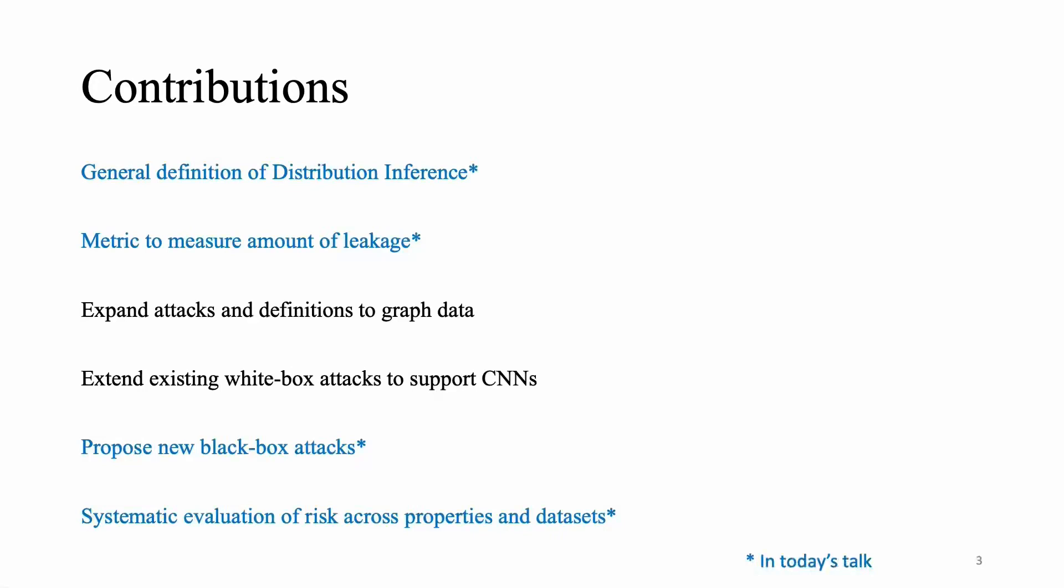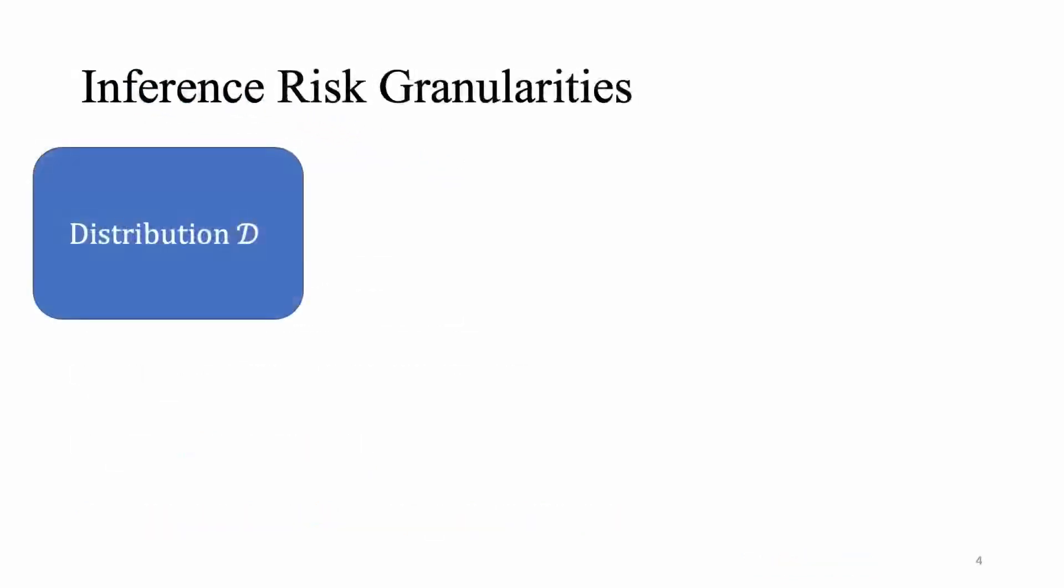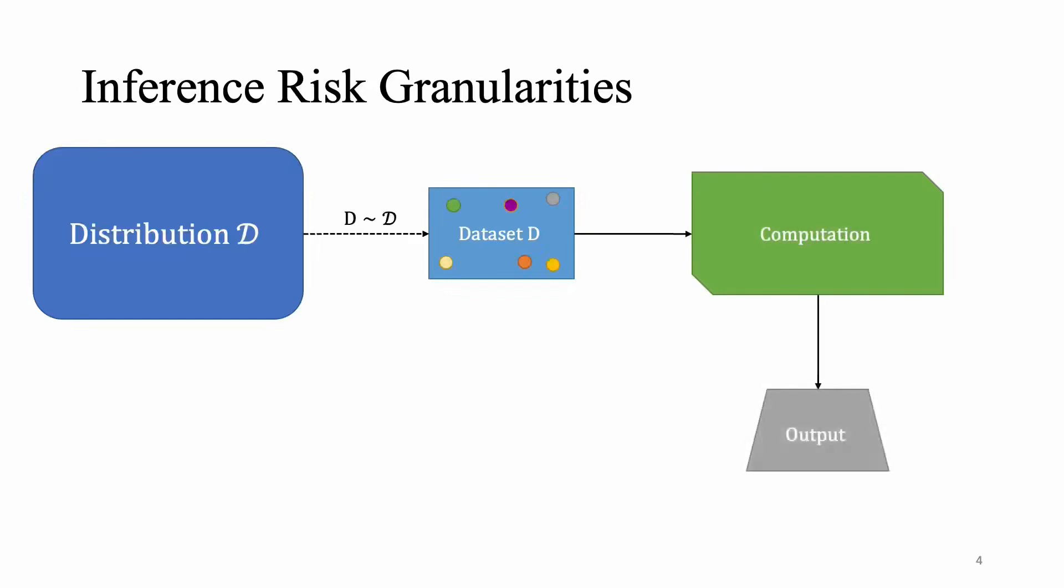Let's say you have some sort of distribution of data from which you sample some data set D. The general pipeline in any such computation is you perform computation on the given data set and that generates an output. So if you were to draw a parallel with machine learning, the distribution would be the underlying training distribution, the data set would be the training data set, and then the computation is training a machine learning model which generates the machine learning model in the output itself.